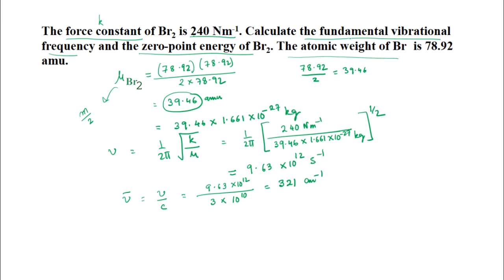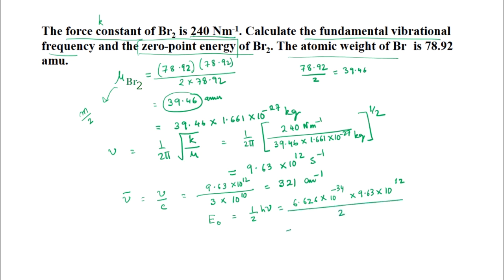Now we find the zero point energy: E₀ = ½hν = (6.626 × 10⁻³⁴ × 9.63 × 10¹²) / 2 = 3.19 × 10⁻²¹ J. This completes the calculation for bromine's vibrational frequency and zero point energy.